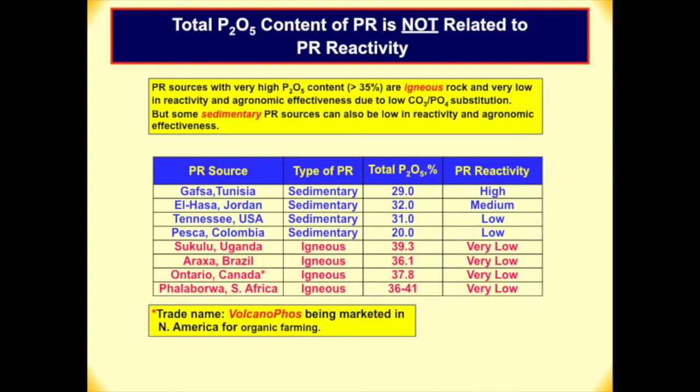Total P2O5 is not related to phosphate rock reactivity. Phosphate sources with very high P2O5, normally more than 35%, are igneous rock and very low in reactivity and economic effectiveness due to low carbonate phosphate substitution. But some sedimentary phosphate rock can also be low in reactivity. Total P2O5 is nothing related to the rock's reactivity. Sedimentary can be high to low, but igneous phosphate rock normally is very low.